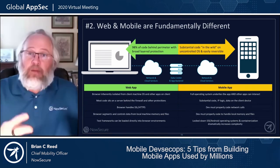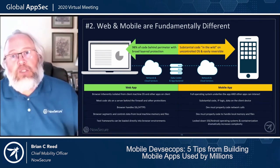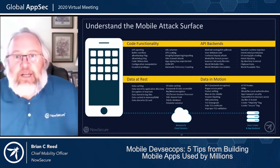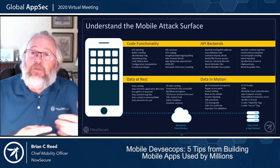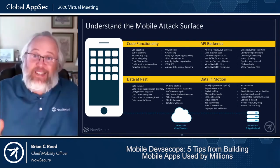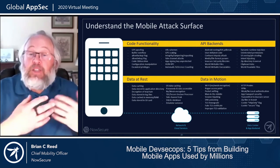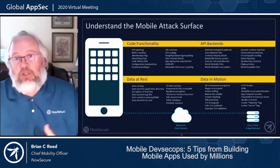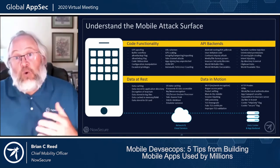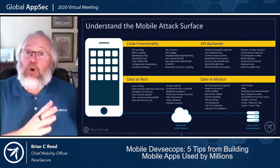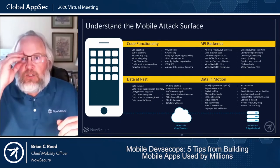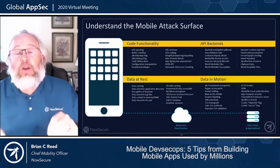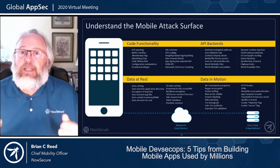The developer and security professional need to understand those fundamental differences and adapt their testing approaches to protect against that. Understanding the mobile attack surface means recognizing that attacks come in four areas: the code itself, making sure it was properly written cleanly; data at rest — storage and in memory on the device; data in motion — connection and transport of data over the air; and the API backends. We find time and again that M2 and M3 are high violation areas where 50% of apps have issues with data at rest and 48% have issues with data in motion.